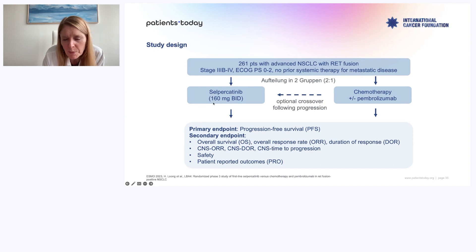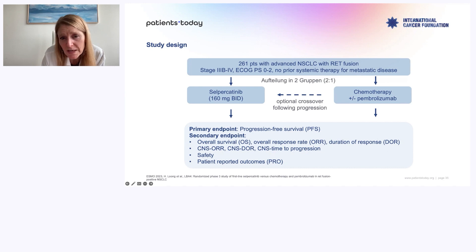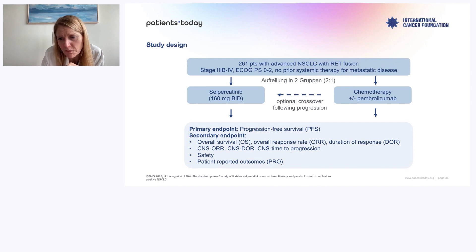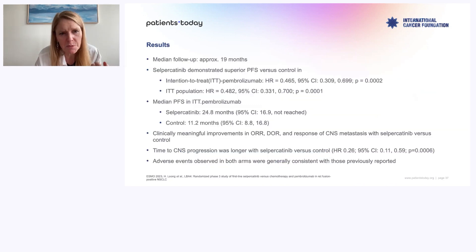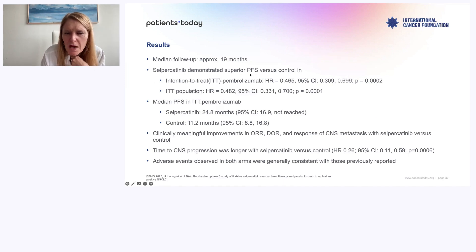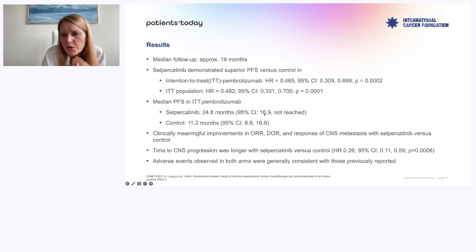We were all convinced PFS would be way better with Selpercatinib. The FDA allowed crossing over, so patients who progressed on chemo could at least receive Selpercatinib afterwards. And it was super positive. Selpercatinib demonstrated superior PFS with a hazard ratio of 0.46, meaning you reduce the risk of progression by 54%. Absolutely amazing. With or without immunotherapy with the chemo, it doesn't change anything — we did suspect that.